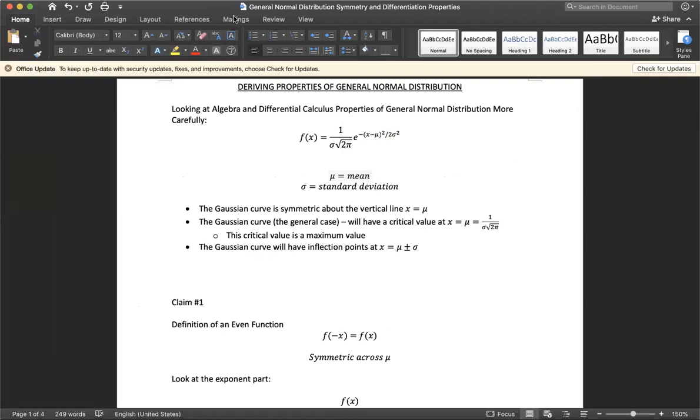Given this equation over here where mu is the population mean and sigma is the standard deviation or measurement of the spread of data, we want to prove that the Gaussian curve is symmetric about the vertical line x equals mu, that the Gaussian curve will have a critical point at x equals mu equals one over sigma times square root of two pi.